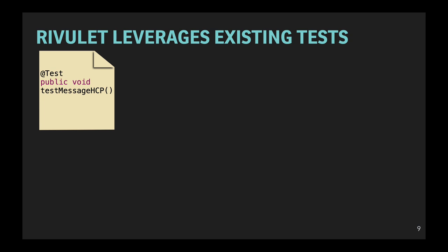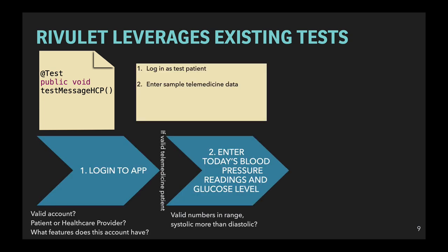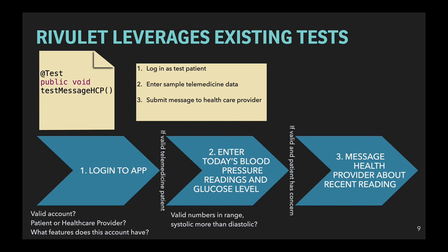Rivulet instead seeks guidance from the test cases the developers have already written, which are not security tests. Rivulet works by enhancing existing functional tests to also check for security properties. For instance, imagine the developer who wants to test this application already wrote a test called Test Message Healthcare Provider. That test might already expose this complicated workflow of logging in as the patient, entering the telemedicine data, and submitting the message, but with just an assertion that checks to make sure that there are no errors in these steps — it's purely a functional test, not checking anything security. Rivulet amplifies this test: by using its embedded analysis, it can detect that the last component is vulnerable to injection attacks and generate exploits to demonstrate them.